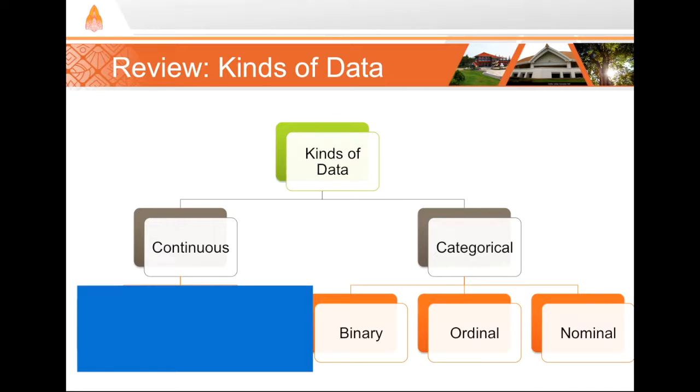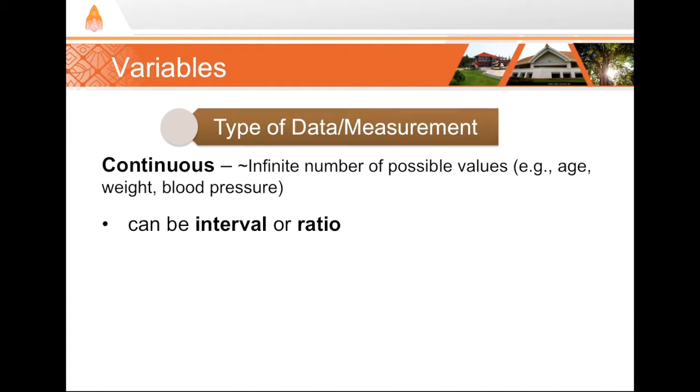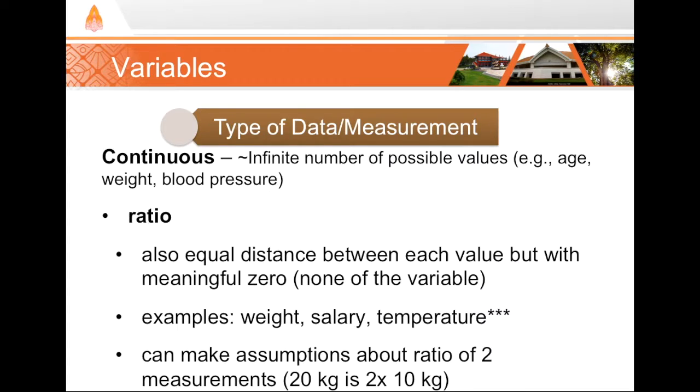Now, let's look at continuous data. For continuous data, variables can be interval or ratio. Almost always, continuous data is a continuous ratio. That is, 0 means 0. If I earn 0 dollars, it means I don't earn anything. A weight of 0 kg means no weight.